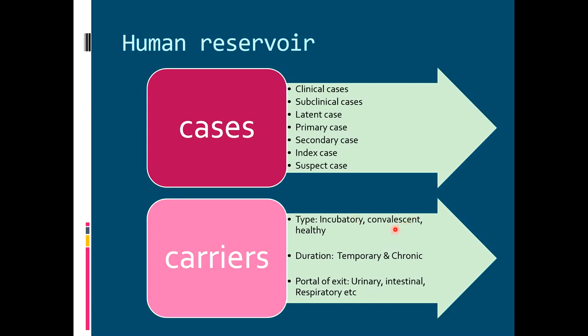Convalescent carriers are those reported in the convalescent stage of disease, when clinical signs and symptoms are subsiding and the patient is recovering, but the carrier is still capable of transmitting the infection. The most well-known example worldwide is the typhoid convalescent carrier, who can persist as a carrier even for years. A chronic convalescent carrier of typhoid fever can excrete the bacilli for up to four to five years.